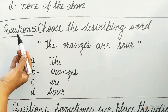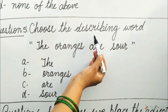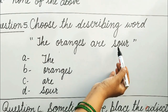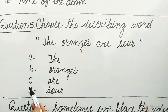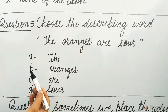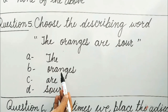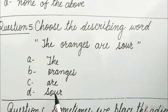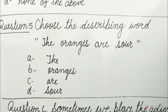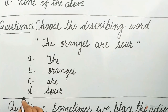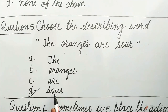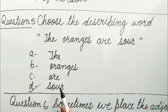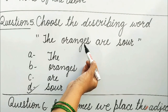Question 5: Choose the describing word. The oranges are sour. Options are A. The, B. Oranges, C. Are, D. Sour. Guess children, which option will be correct? Yes, it is D — Sour. Because the word sour describes the taste of the orange.